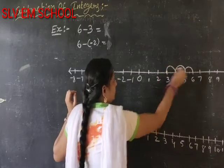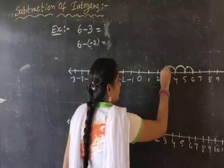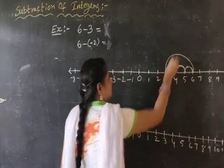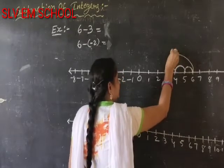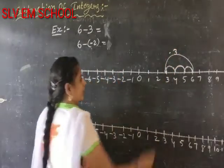Count 1, 2, 3. One, two, three steps. The answer is 4. Now compare: 6 minus 3 is equal to...